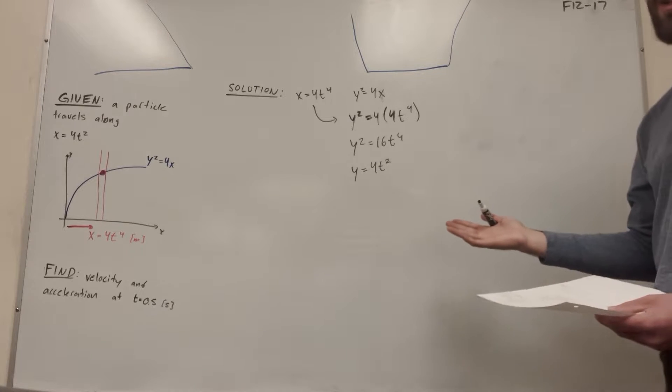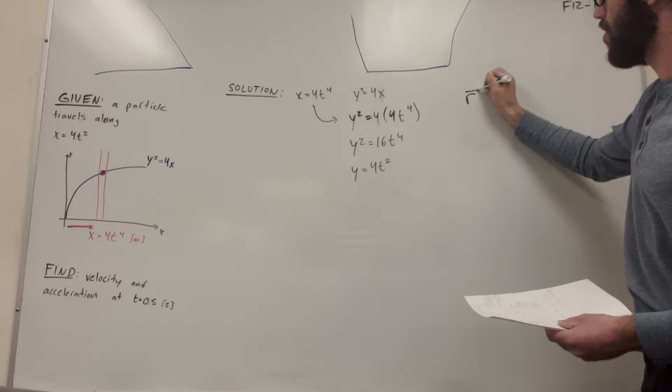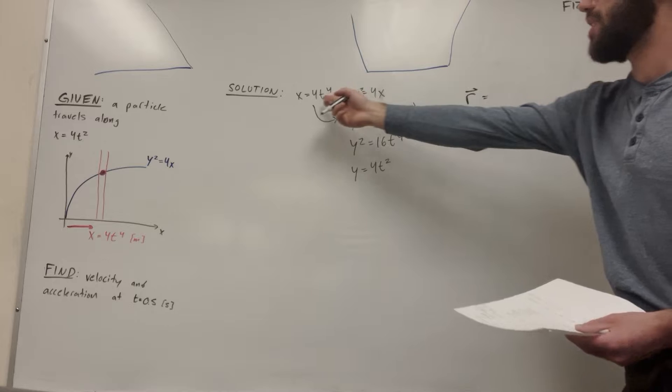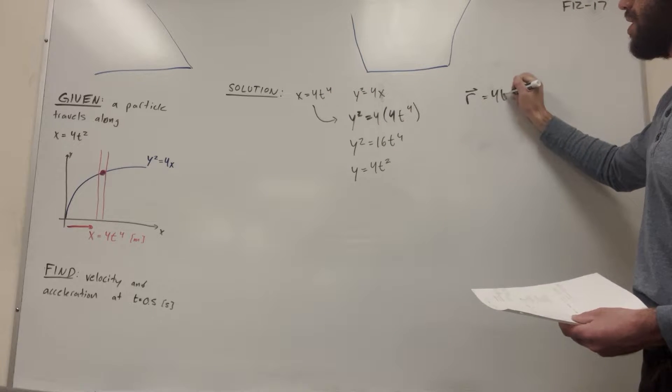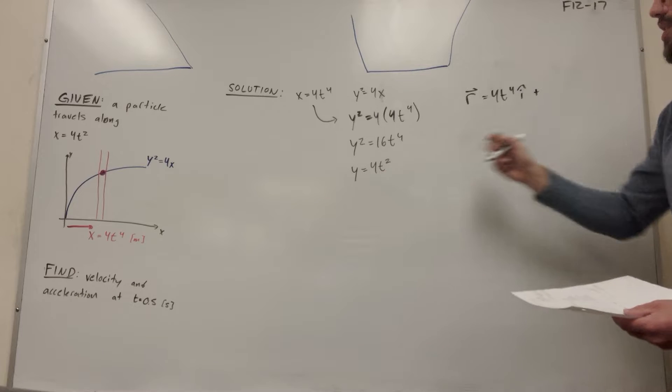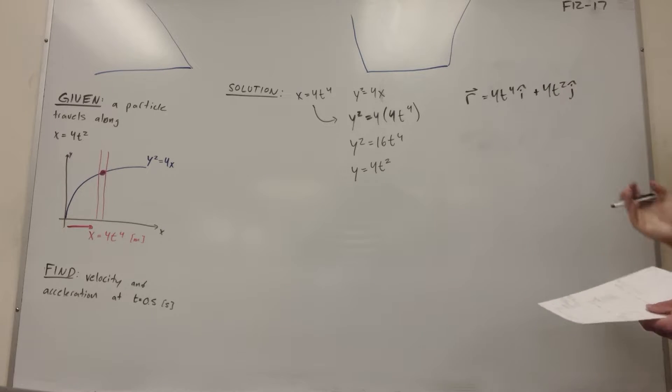Nice. So let's write a vector of what our position vector is. So let's use r for our position vector. So our i, our x component, is going to be 4t to the 4th. Our y component is going to be 4t to the 2nd.